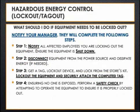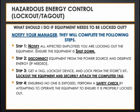So what should you do if you find that equipment is unsafe to operate? First, notify your manager or supervisor. They will complete the following steps. Step 1: Notify all affected employees that you are locking out the equipment, and ensure that the equipment is shut down. Step 2: Disconnect the equipment from the power source and dissipate energy if needed. This could mean lowering the forks on the forklift all the way to the ground and then turning it off and removing the key, or simply unplugging electrical equipment.